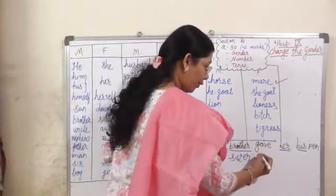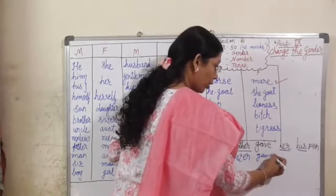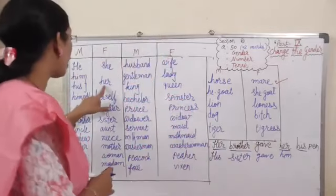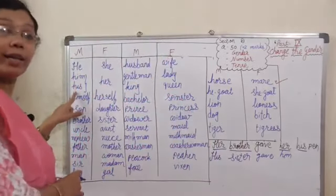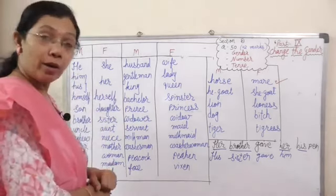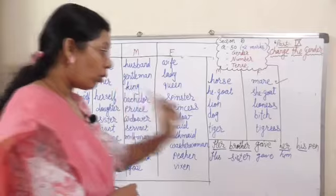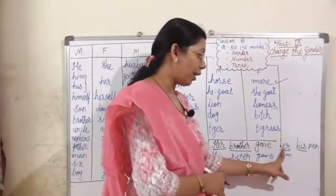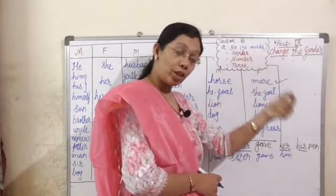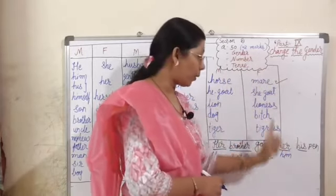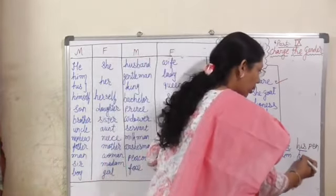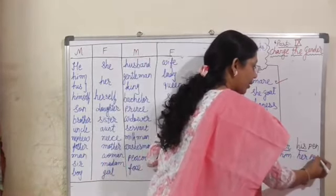'Sister' — gave — no change there. 'Her' is there, so it becomes 'him'. This 'her' is in the objective case. So it becomes 'him'. 'His' becomes 'her'. Pen — no change. So the answer is: 'His sister gave him her pen.'